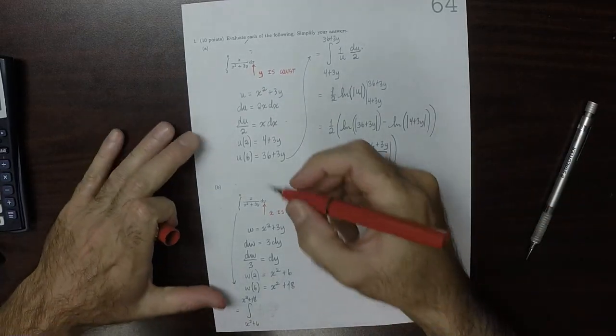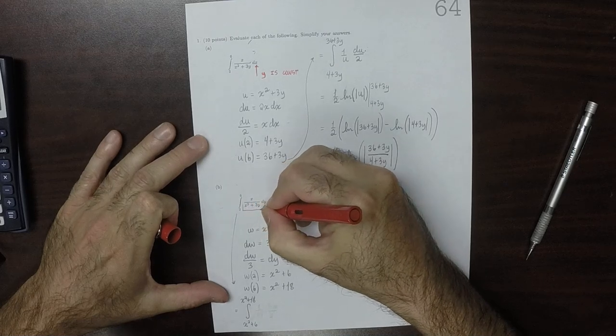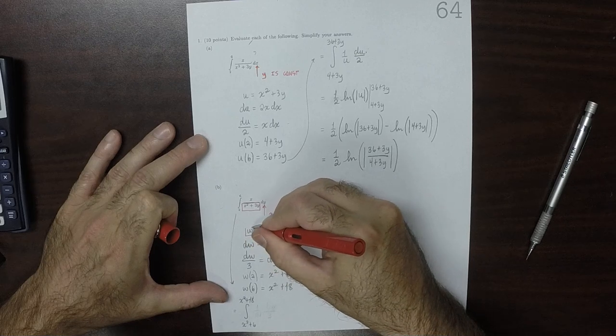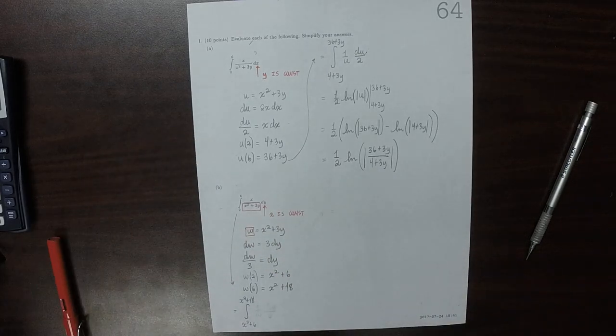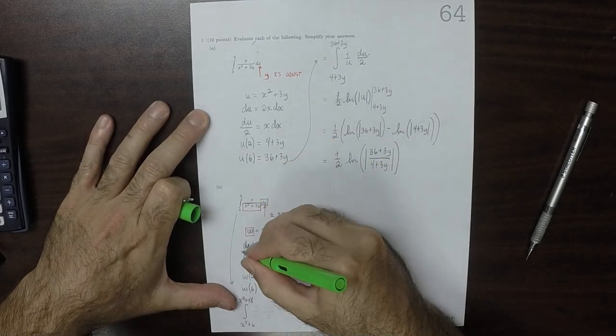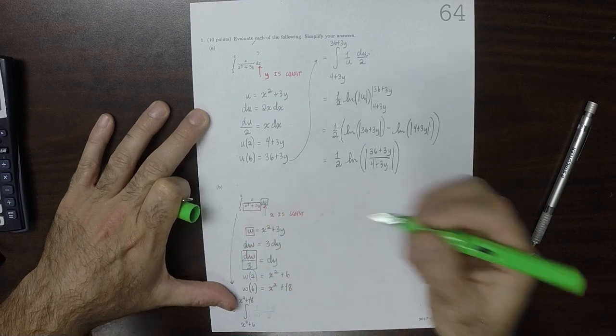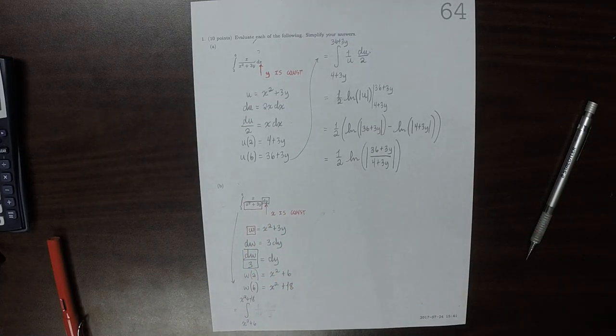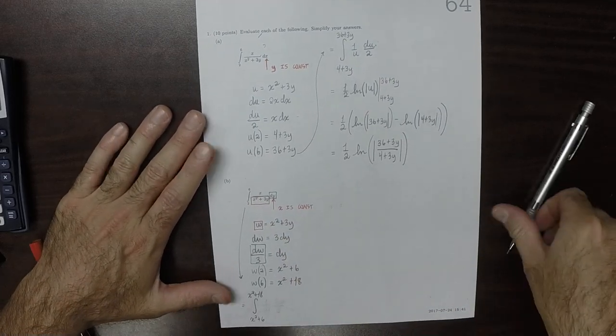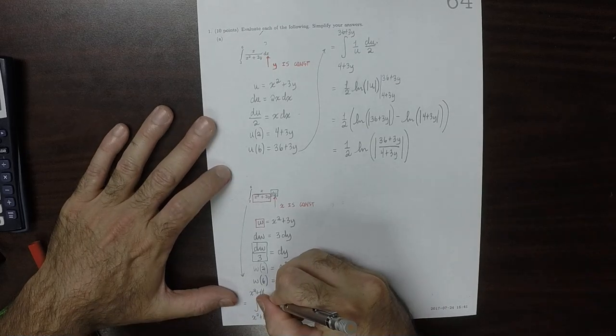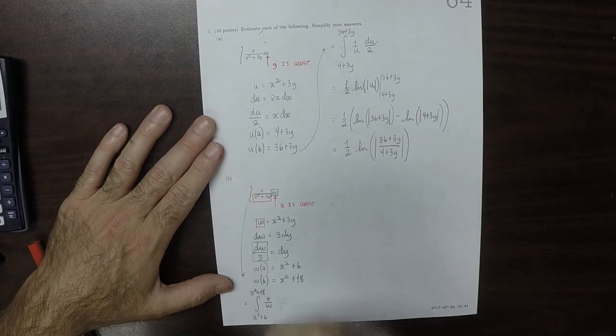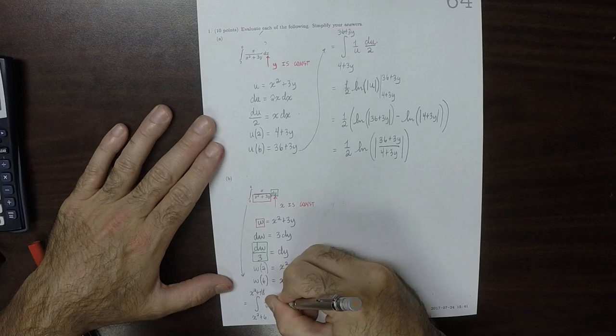So let's cover everything. This part is going to become w. This part, dy, is going to become dw over 3. And you might be concerned that the x is not being covered. But remember, x is a constant. So this will be x over w. That x is the original x. And then dw over 3.